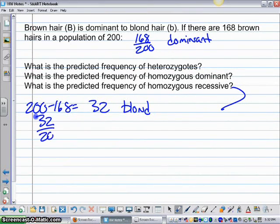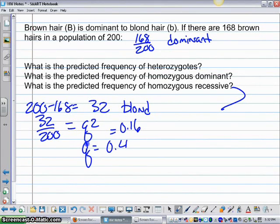So 32 out of 200 is going to be Q squared. So that is going to give you 32 divided by 200, which is 0.16. And then my Q value there is going to be 0.4, because the square root of 16 is 4.